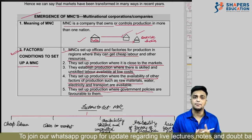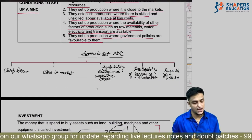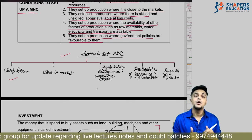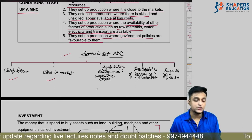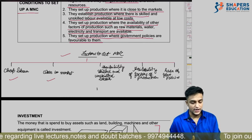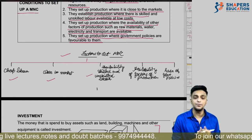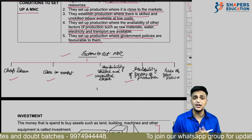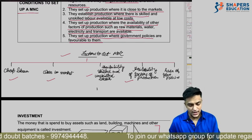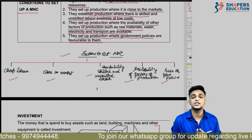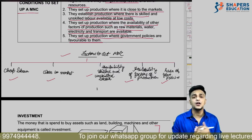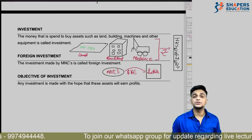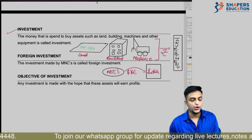In short, the factors to set up MNCs are: cheap labor, proximity to market, availability of skilled and unskilled labor at low cost, availability of other factors of production like electricity and raw materials, and ease of government policy — where government policies are favorable. Then we move to our next topic: investment.